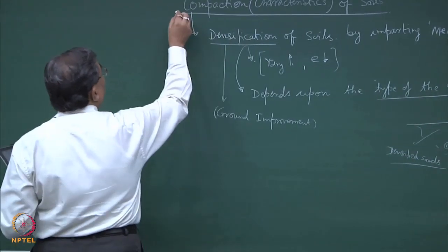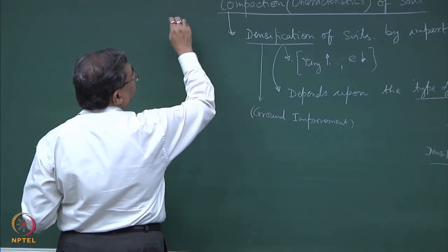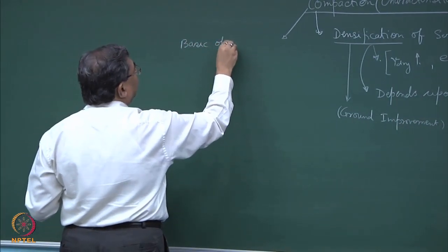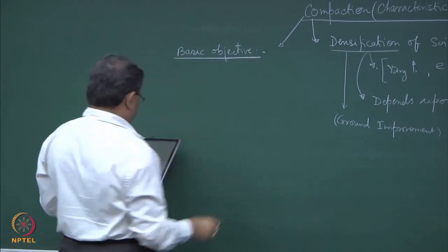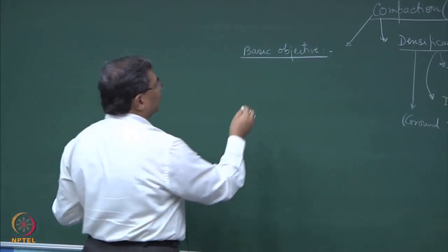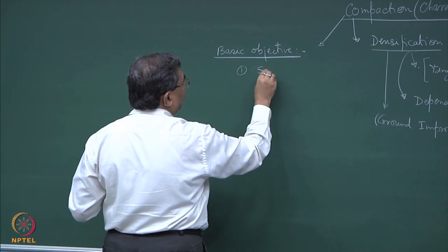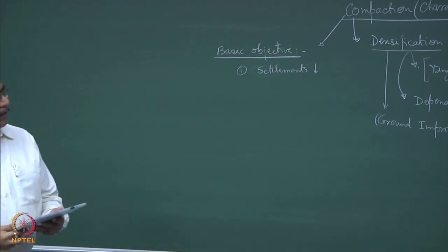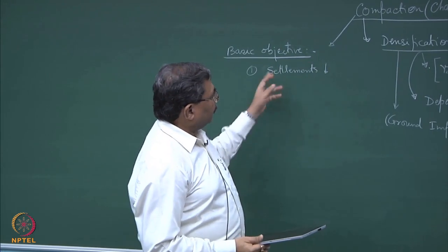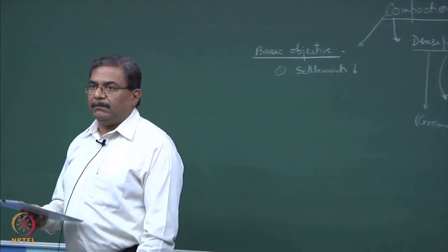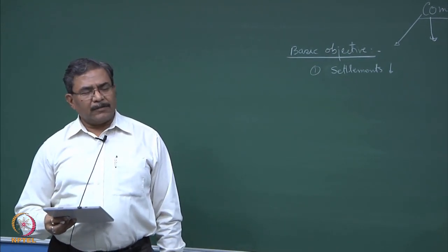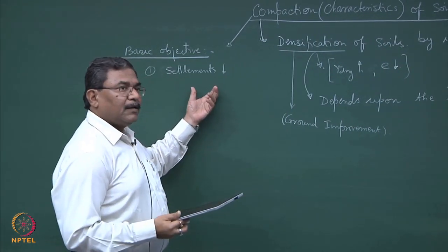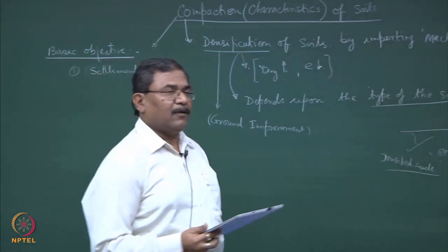As far as compaction is concerned, what is the basic objective? The basic objective is — I want to reduce settlements. We will be talking subsequently about how to compute the settlements of foundations and infrastructure made up of soil and resting on soils. Most of the disasters I showed you in the problematic soil presentation — the main cause of most failures could be lack of compaction or poor compaction.